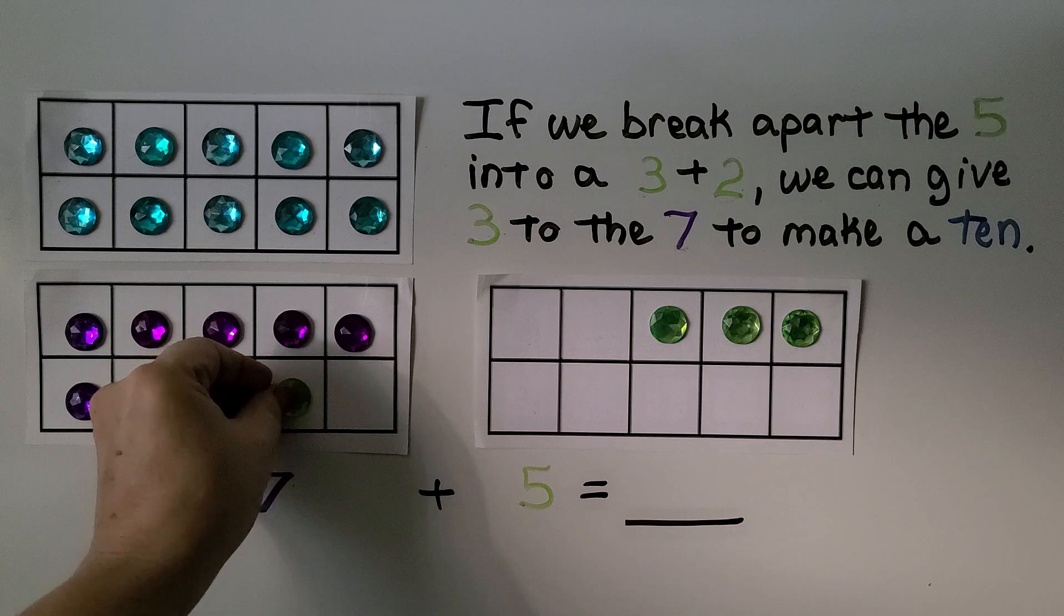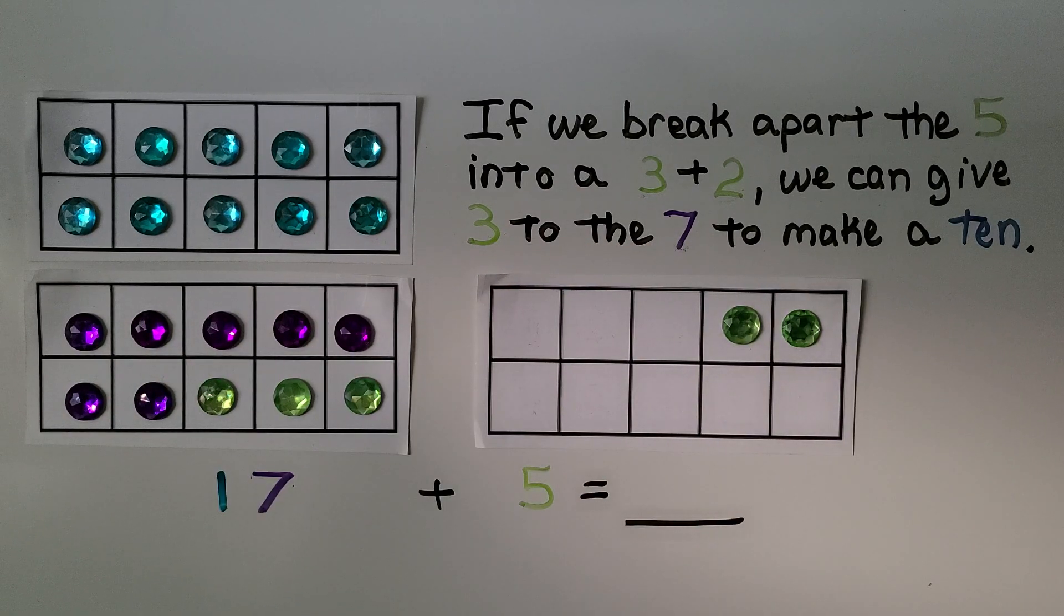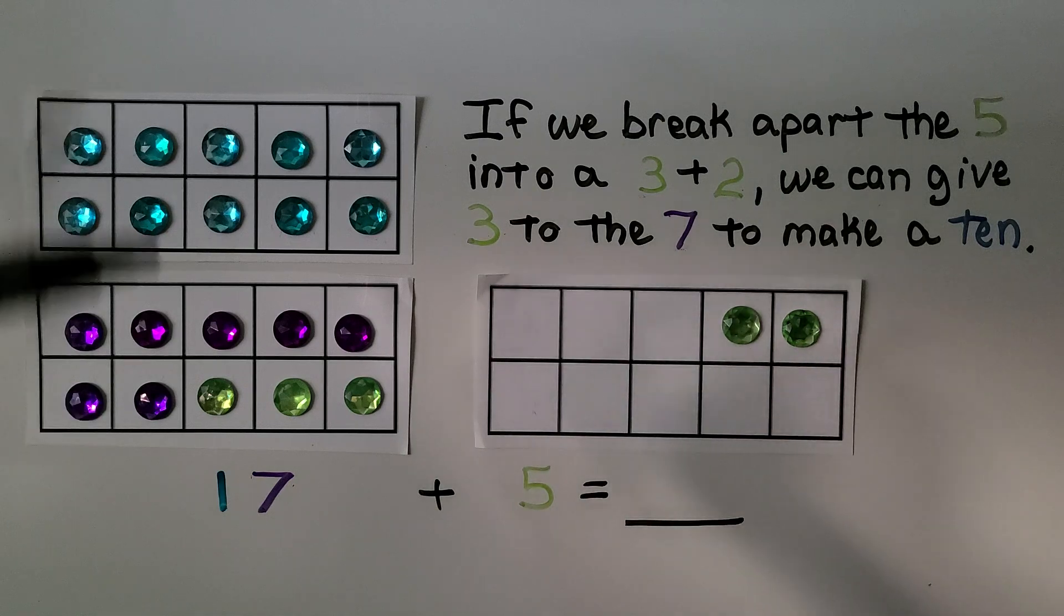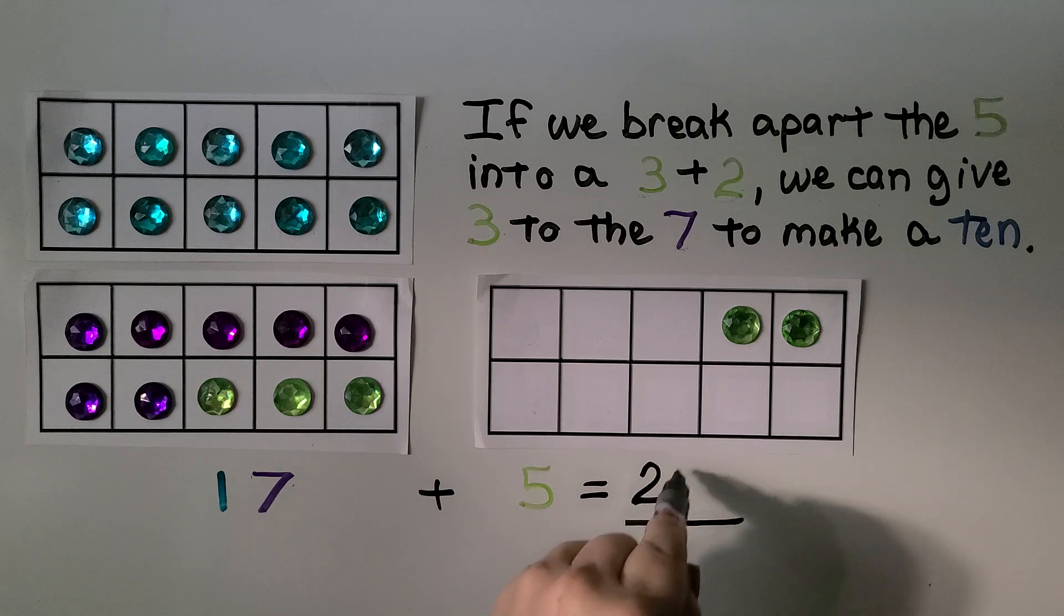1, 2, 3. Now we made another ten. Now we have 2 tens, 2 ones. 17 plus 5 is equal to 22.